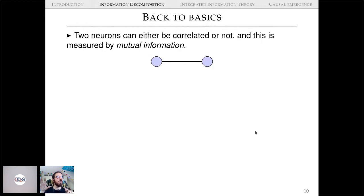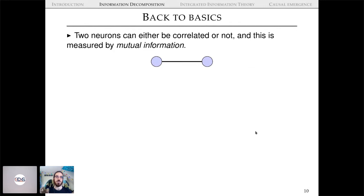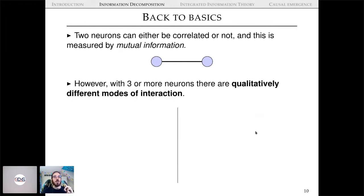Let me start with a perspective on PID that's slightly non-mainstream but that really helped me get an intuitive grasp. When you have just two neurons or two variables, they can either be correlated or not, measured by mutual information — zero if independent, non-zero if dependent.